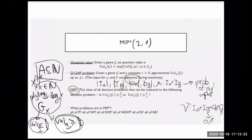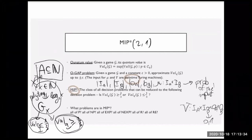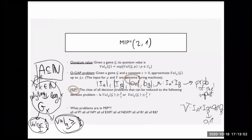I need to tell you something about how the game is given to me, because I can give you the game in a very succinct way. We will talk today about the succinct graph coloring problem. You can think of the succinct game problem: I give you the game using some circuit, which is very succinct, and I ask about the value of this game.